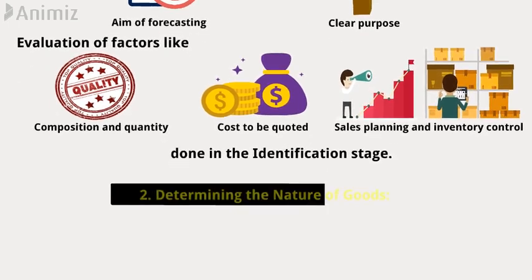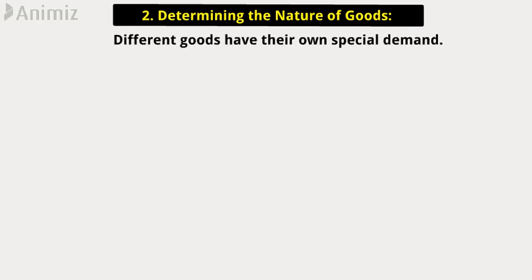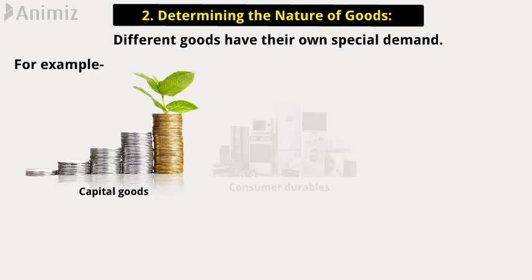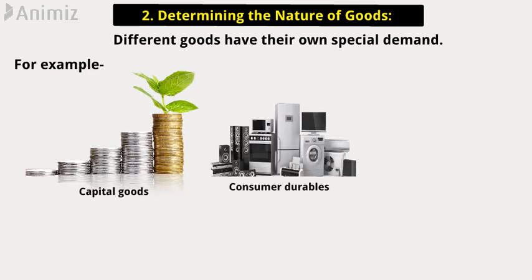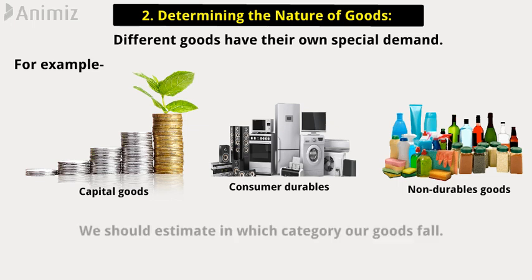Step 2: Determining the nature of goods. Different goods have their own special demand. For example, capital goods, consumer durables, and non-durable goods. We should estimate in which category our goods fall.